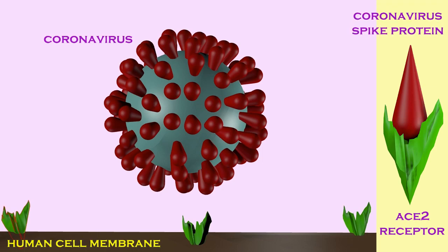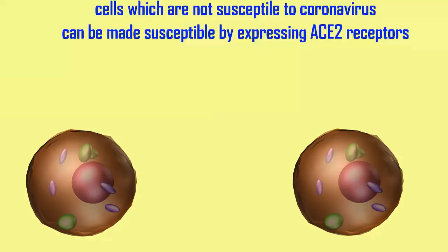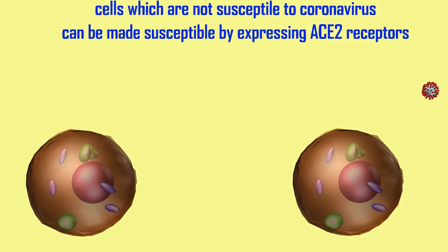ACE2 is the human protein which recognizes the spike protein of the coronavirus. This can be demonstrated experimentally: if cells in tissue culture do not express ACE2, they are not infected by coronavirus.